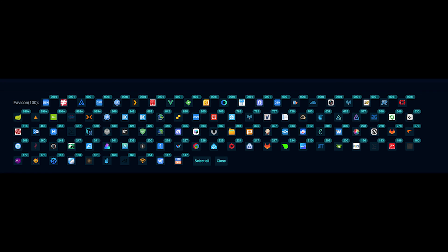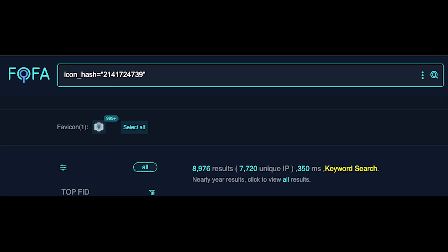One thing common across many of these is the icon hash. In FOFA, there's a feature where if you type in an organization's name, you can get a whole section of icon hashes. So for something like Juniper, you simply find the specific hash, paste it into Shodan or FOFA, and try to exploit from there.